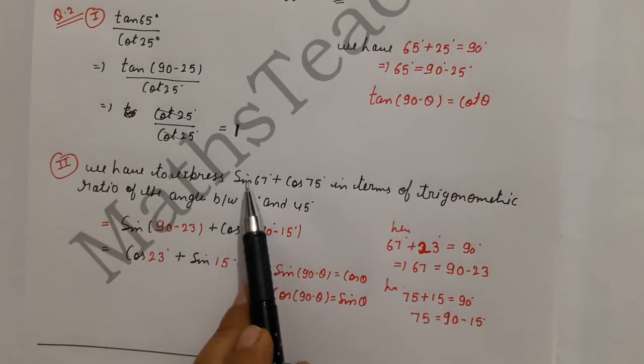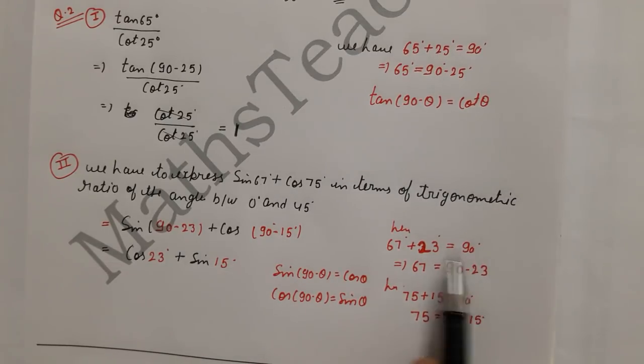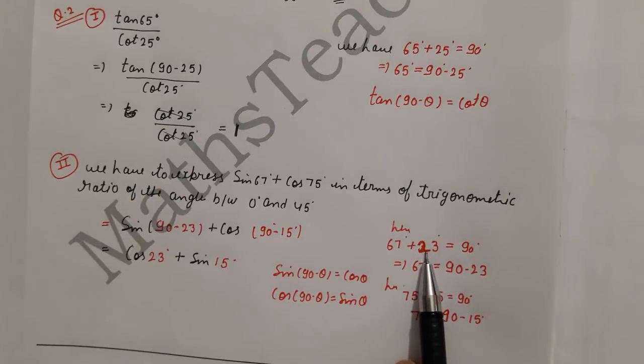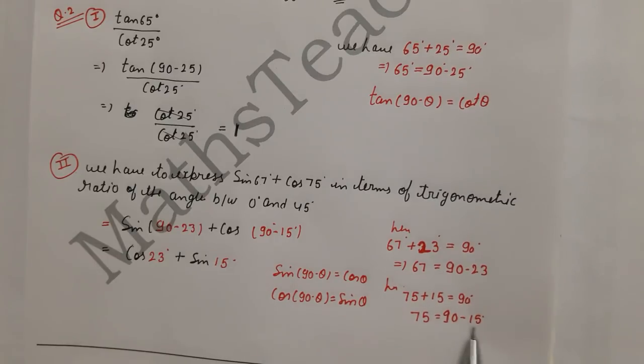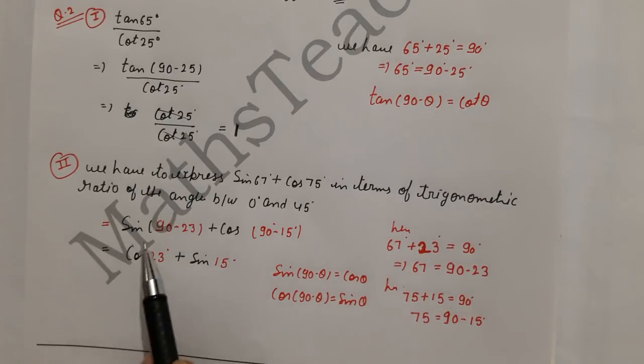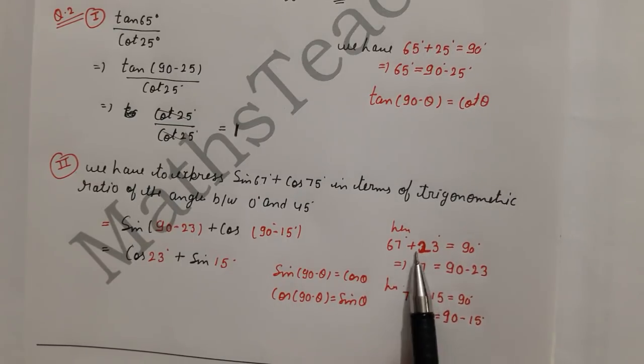This is your complementary angle. You have to see what will add in 67. So 90 minus 67 will be 23. For 75, 90 minus 15 is 75. So what will add in 67? We have to change between 0 and 45.